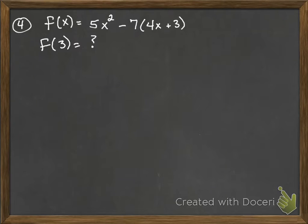Okay, number four gives you the equation f of x is equal to 5x squared minus 7 parentheses 4x plus 3. It says, what is the value of f at 3?